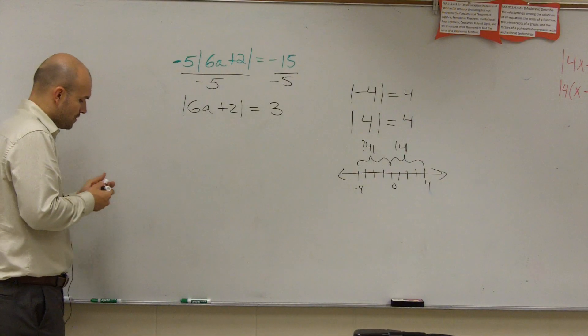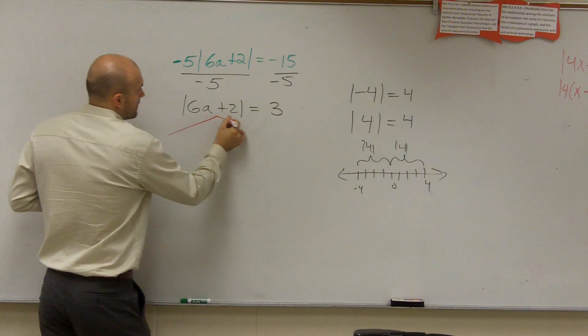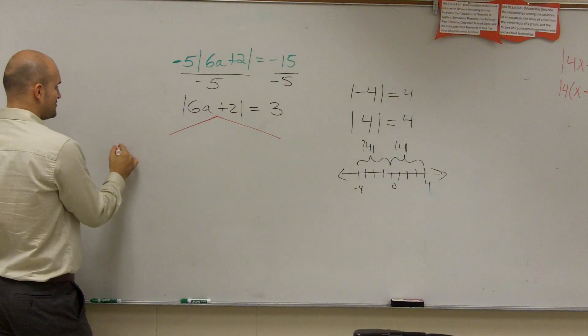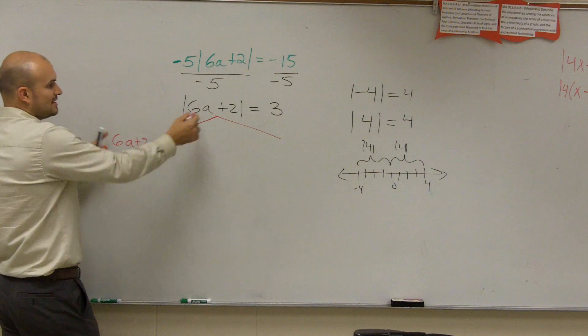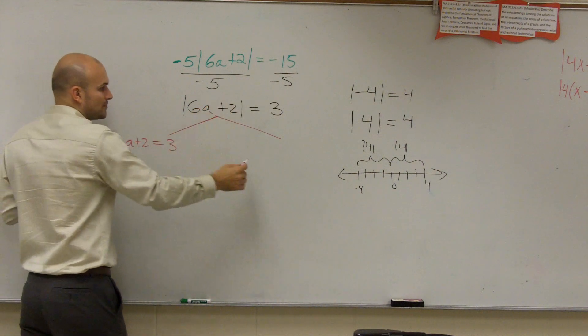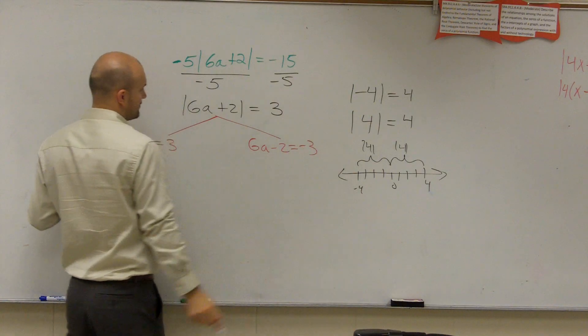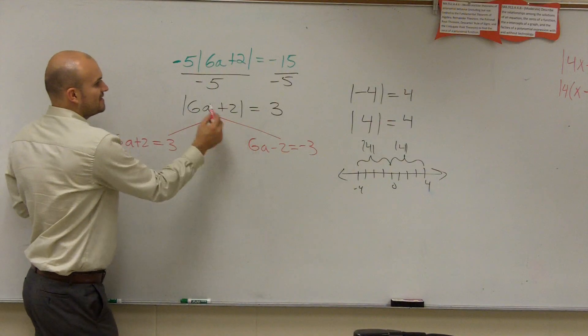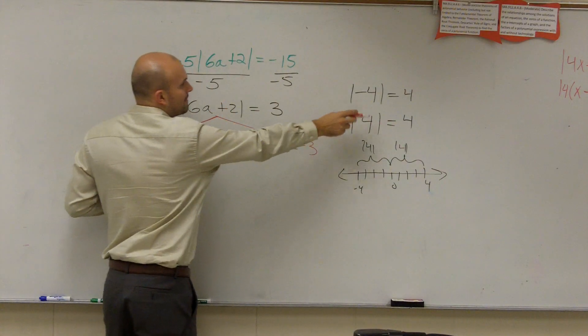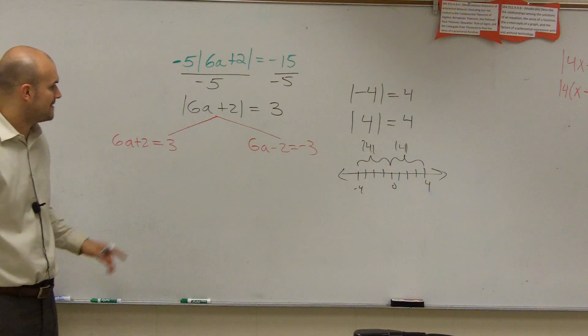So what I'm going to do is set up two cases. My first case is going to be 6a plus 2 equals 3, meaning this inside of here can equal 3. And then also 6a plus 2 could also equal negative 3. Inside of here could equal negative 3, because it doesn't matter if this equals 3 or negative 3, my answer is always going to be 3 by the absolute value sign.